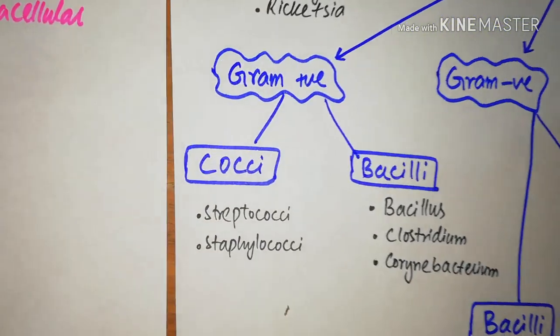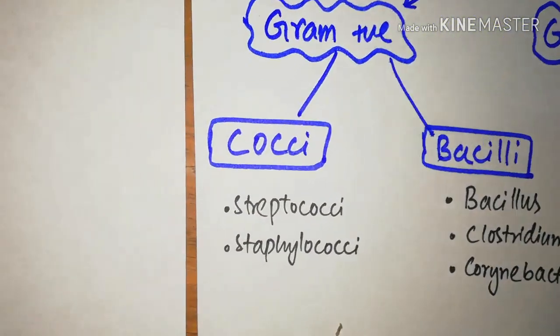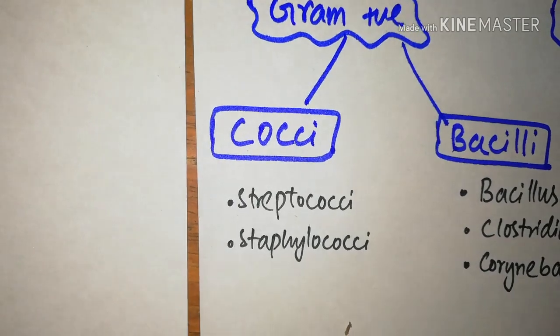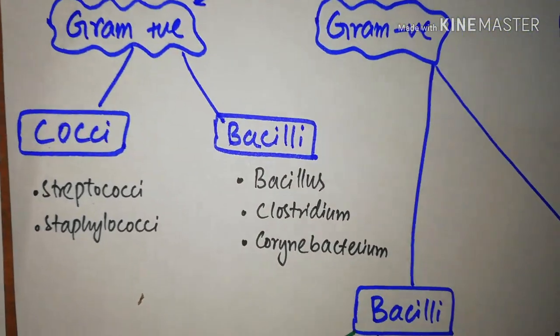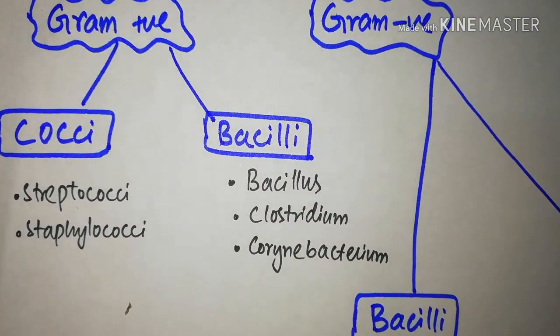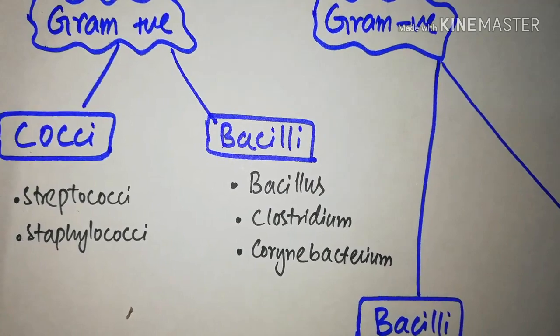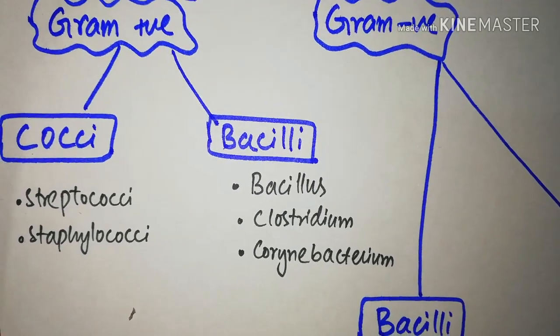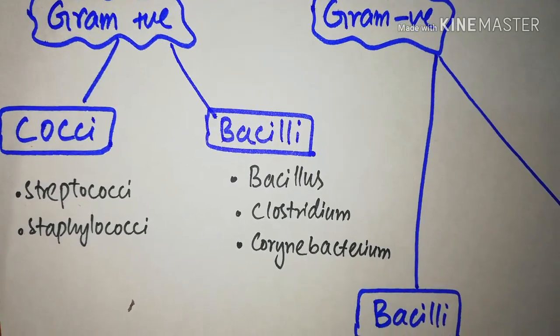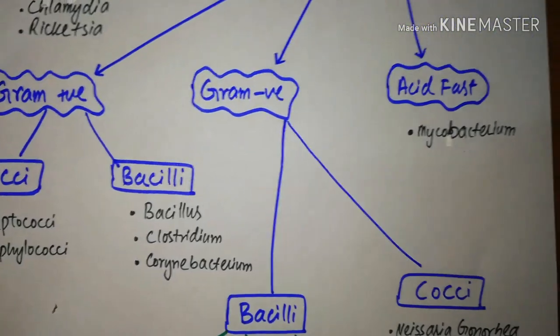First of all, the gram positive cocci — it includes the staphylococcal and the streptococcal species. Gram positive bacilli includes Bacillus, Clostridium, and the Corynebacterium species.